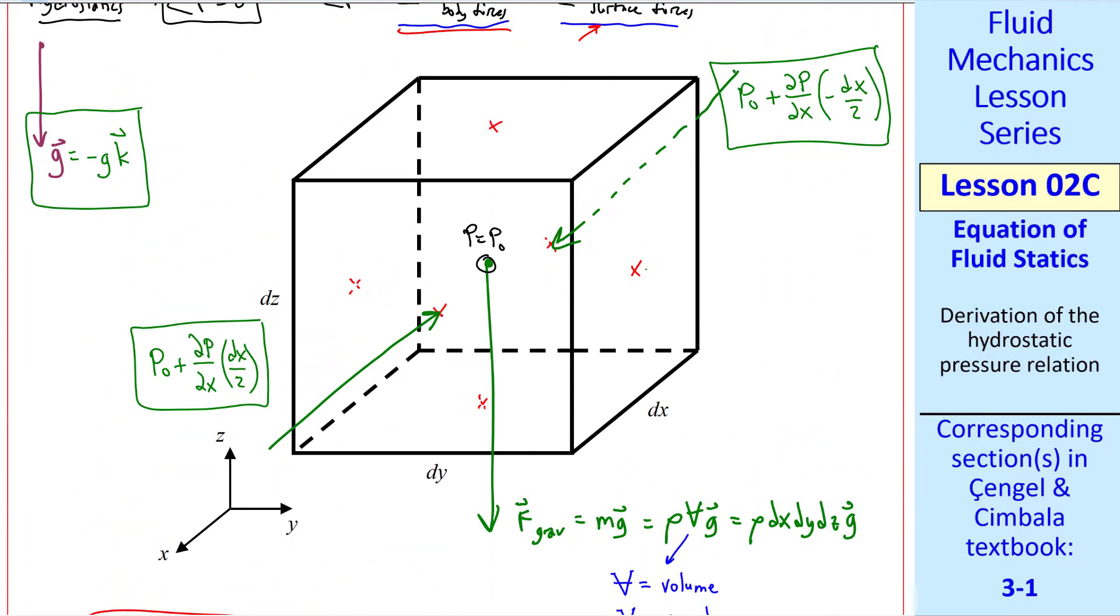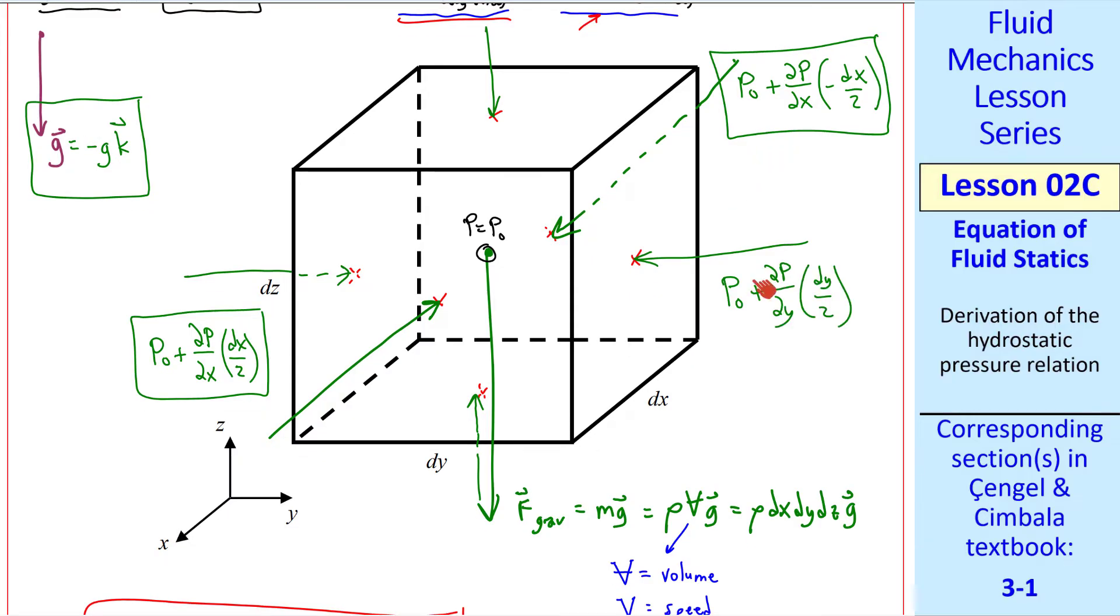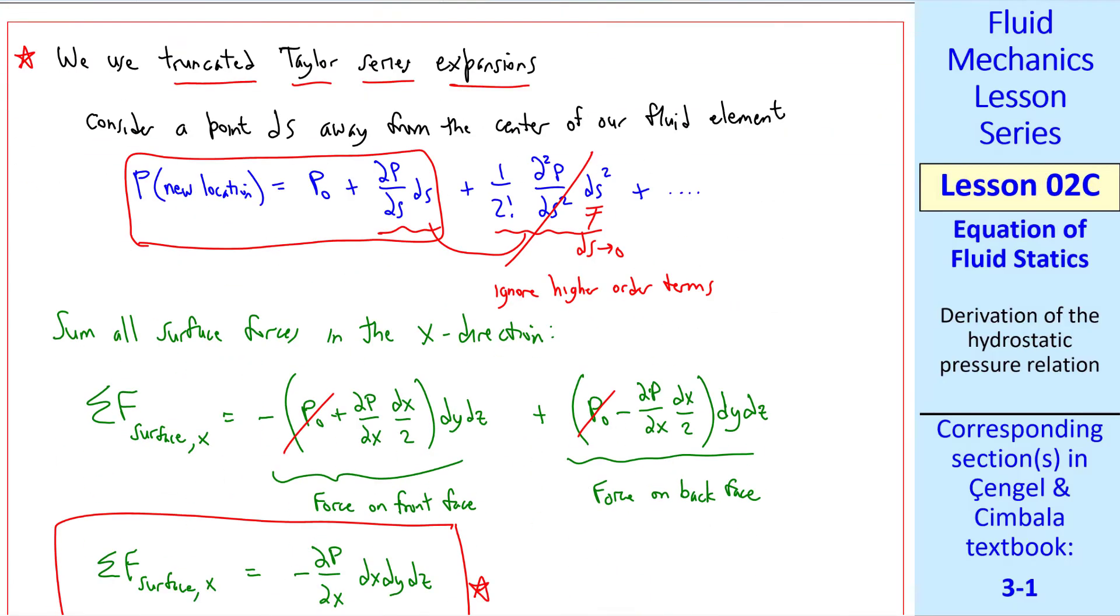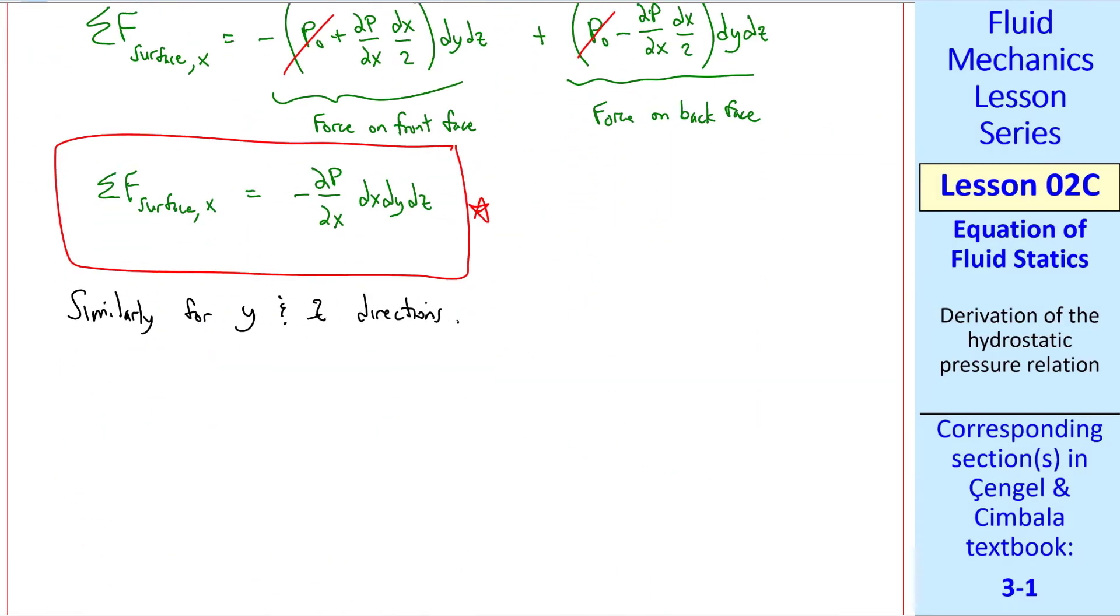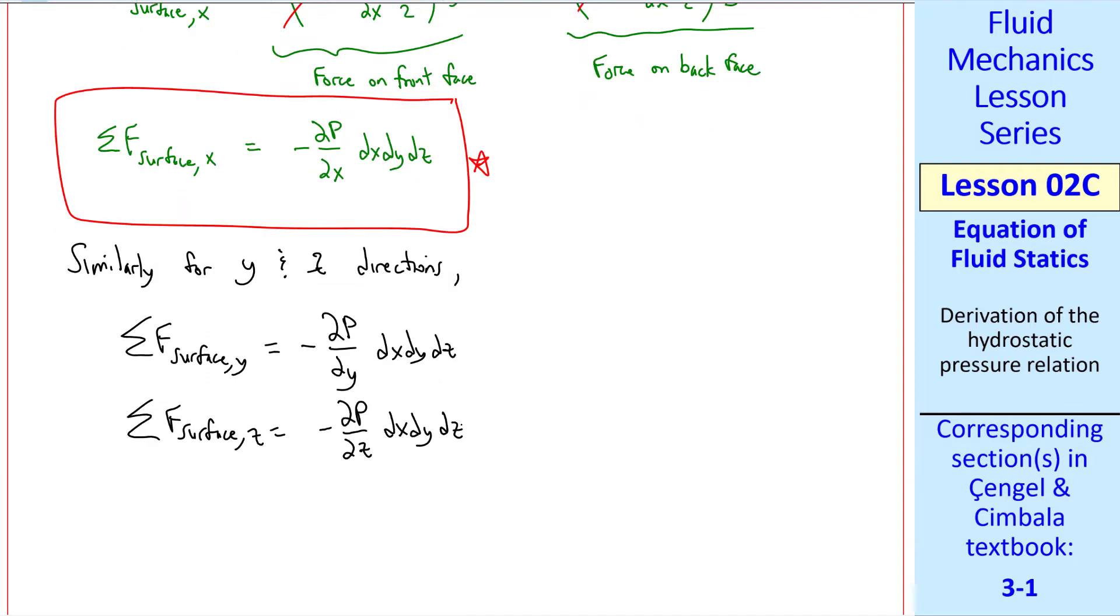Going back to our drawing, we now do the same thing for forces due to pressure in the y direction and in the z directions. Keeping in mind that pressure always acts inward and normal. I'm not going to write all this out. We do the same kind of truncated Taylor series analysis as we did in the x direction. I'll just do one of these. On the right face, the distance is dy over 2 and the partial derivative is del p del y. So this is the force acting on the right face. You can see that the math turns out to be the same except for changing x to y and then to z. So let's go back here and say similarly for the y and z directions. Sigma f surface y is minus del p del y dx dy dz. And sigma f surface z is negative del p del z dx dy dz.